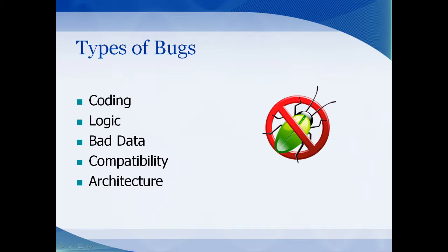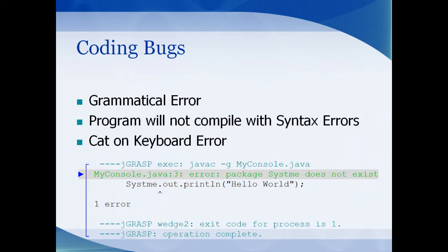If you refer back to the first computer bug, it was literally a bug. But since then, our bugs have become a little bit more refined. We have coding, logic, bad data bugs, comparative, compatibility, and architecture bugs.